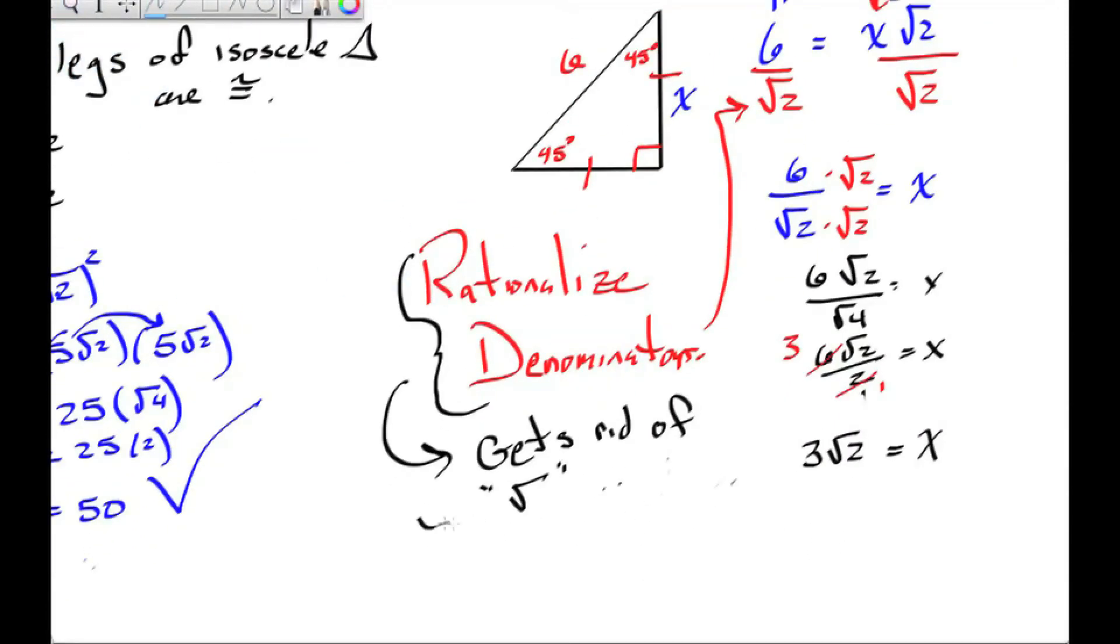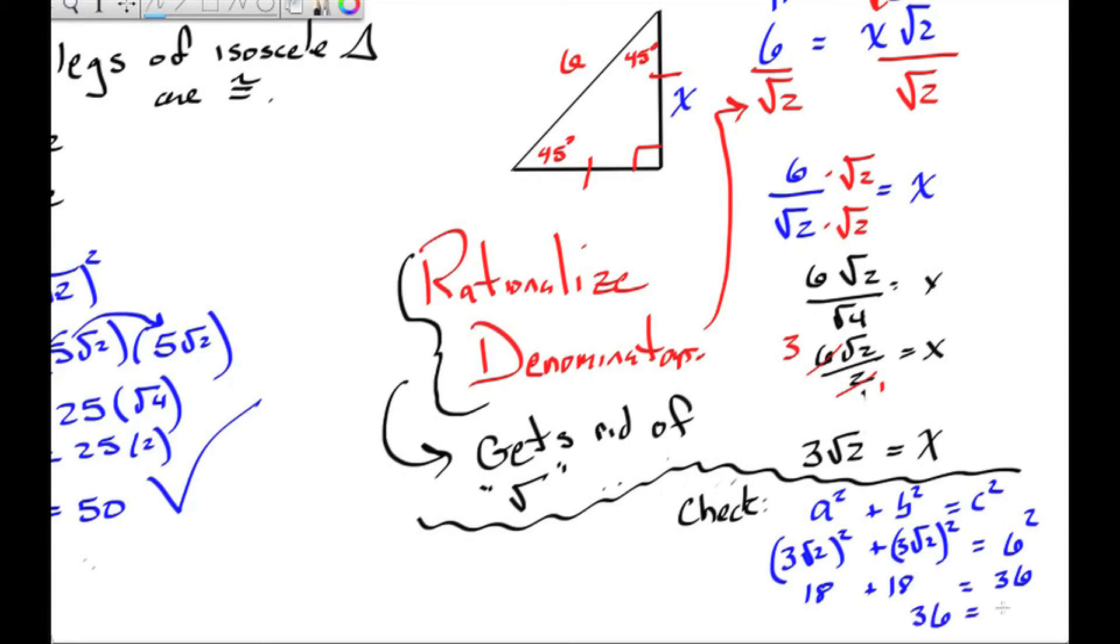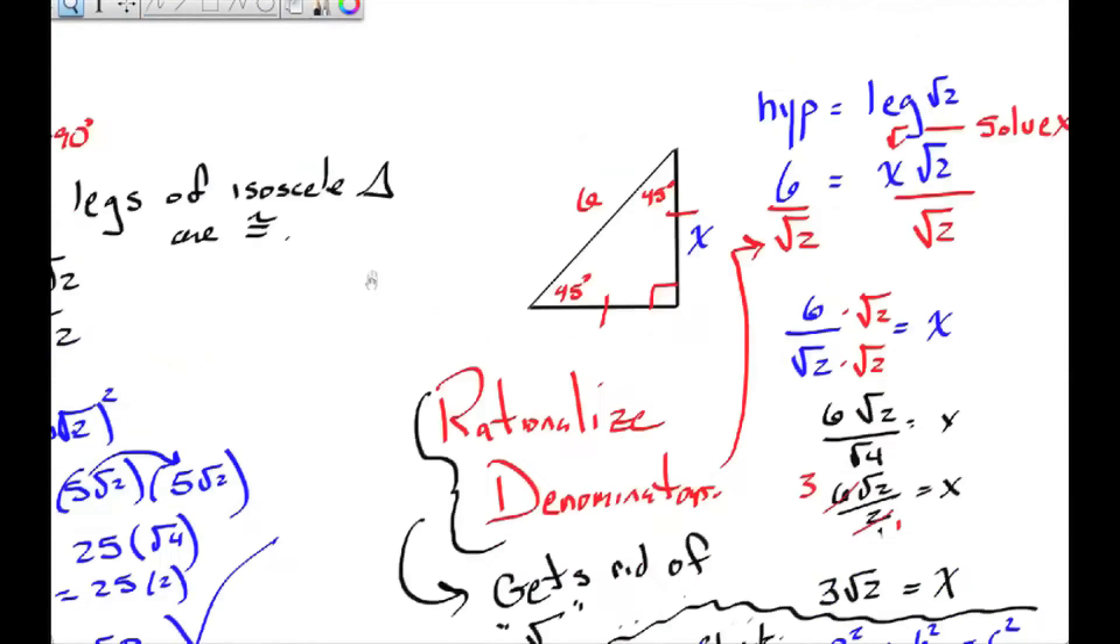Now let's check this. 3 root 2 are my legs, and 6 is my hypotenuse. So I'll substitute this in, and I get 18 plus 18 equals 36. Check.